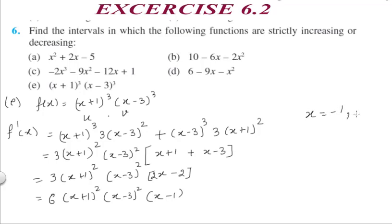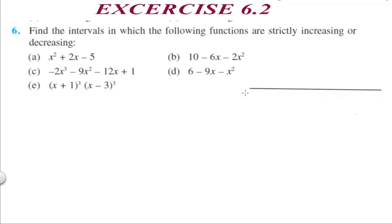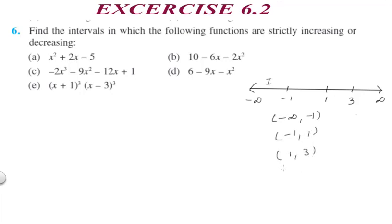Plotting -1, 1, and 3 on the number line divides it into four intervals: minus infinity to -1, -1 to 1, 1 to 3, and 3 to infinity. In between each interval we pick any value and substitute it into f'(x) to check whether it is less than or greater than 0, determining if the function is strictly increasing or decreasing.